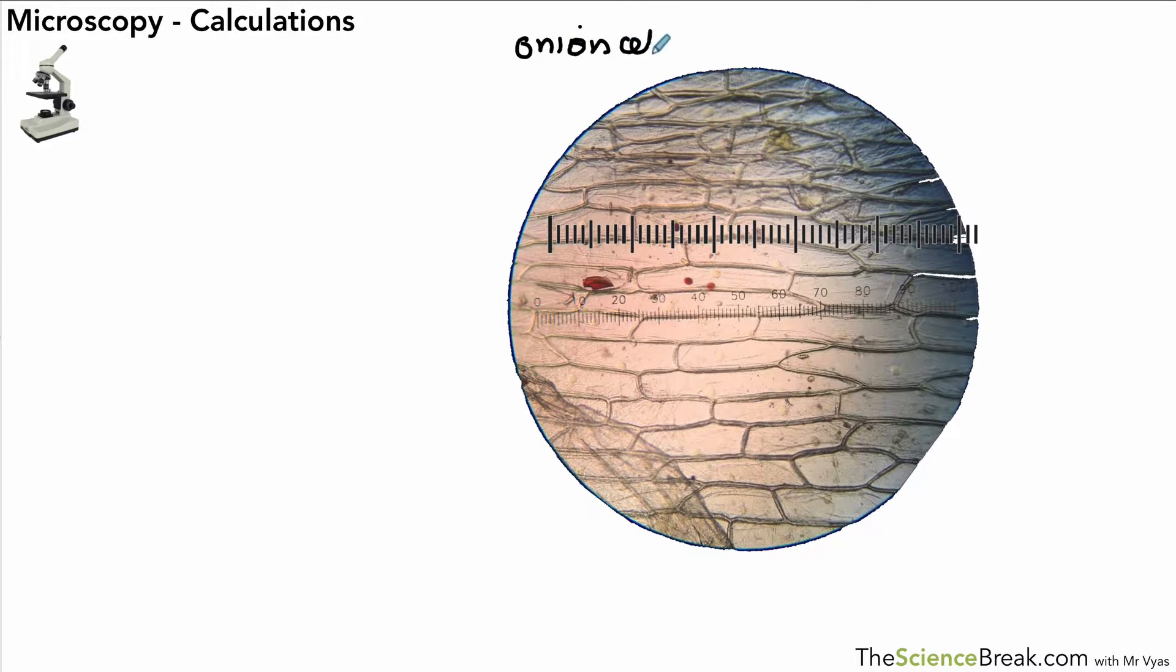These are onion cells. Again, this is hopefully something you've done in class and it's always good practice to show what magnification the image is, so we've got times 400. There is our eyepiece graticule scale and we're going to measure the length of that cell there. You might not be able to see that too clearly but it's from there to there.